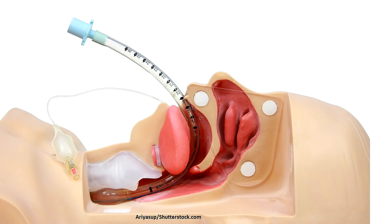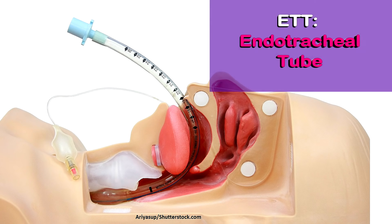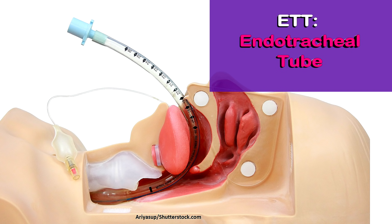Then we have the endotracheal tube route. If your patient has an endotracheal tube, medications can be given through it, but only in emergency situations when access cannot be obtained any other way. Emergency-type drugs are given through it, abbreviated ETT, and medications instilled this way are absorbed through the alveoli and cross over into the bloodstream.